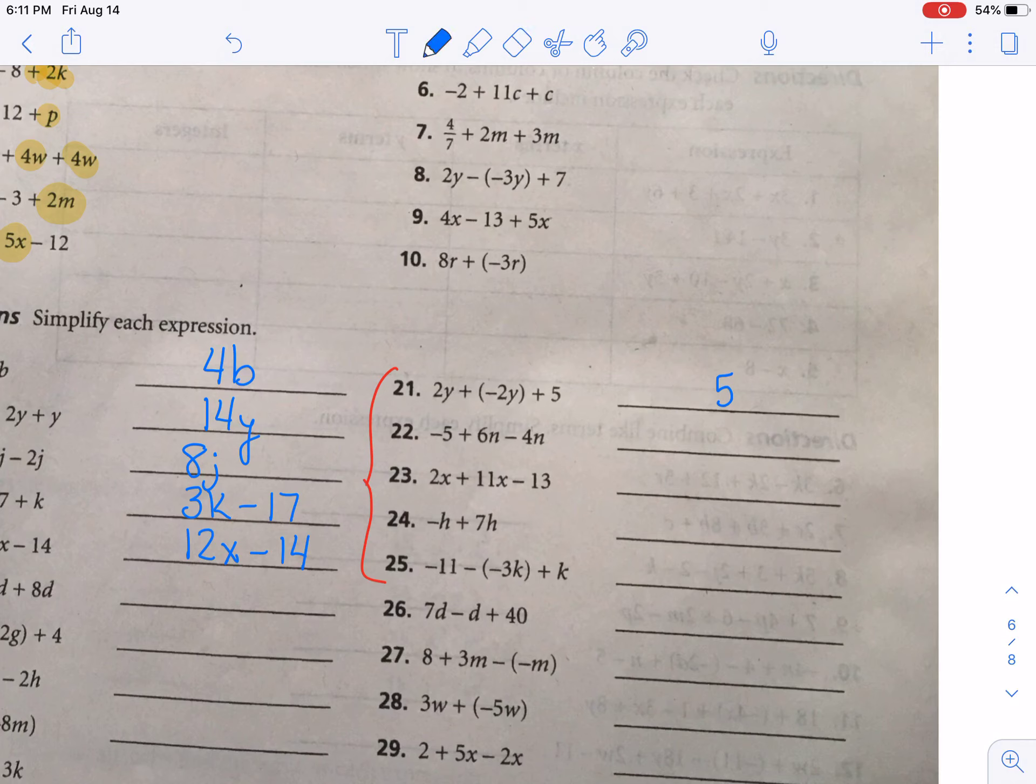For 22, we have a 6n minus 4n. Those are the like terms. And then you just have that negative 5 there also. You can write it first. And then 6n minus 4n would be 2n. Or if you prefer, and a lot of people do, they prefer to write 2n minus 5. Either one is fine. For 23, we have a 2x plus 11x. So that is 13x. And then the minus 13 stays.